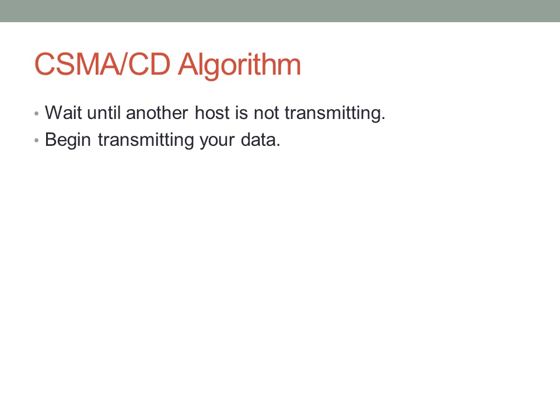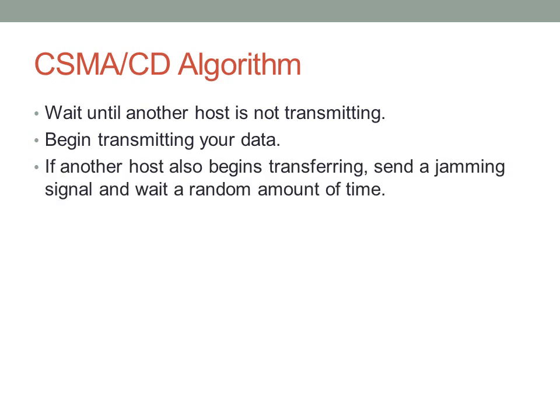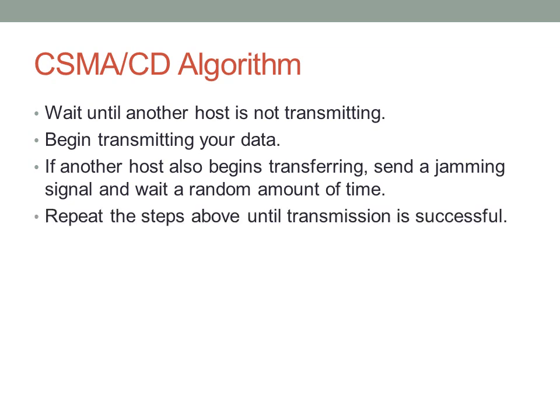It might happen that another device has also been waiting for the line to be free and begins talking at the same time. If this happens, both devices will see that the voltage is being raised and will send a jamming signal saying a collision has been detected. They'll both wait a random amount of time — a timer is set based on a pseudorandom number generator. After this, the device tries again: it waits until the line is free, retransmits, and continues until the transmission is successful.